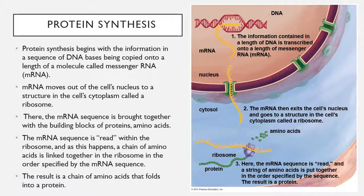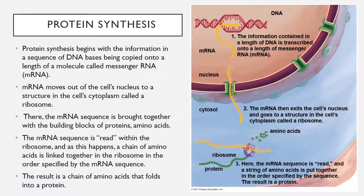In the ribosome, the mRNA sequence is brought together with building blocks of protein called amino acids. There are a whole bunch of amino acids floating around, and as the mRNA code gets read, those amino acids start getting placed together in the order specified by this mRNA code. The result is a chain of amino acids, built in the correct order, and that builds a specific protein.